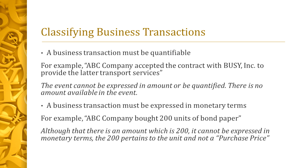For classifying, the rule is that a business transaction must be quantifiable — able to be measured. For example, ABC Company accepted a contract with BC Incorporated to provide transport services. The event cannot be expressed in an amount or be quantified; there is no amount available. So although that is a business transaction, it cannot be recorded because it has no monetary impact and cannot be measured.